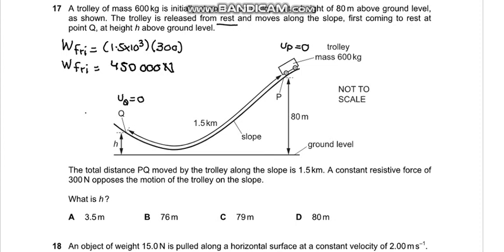Now let's find the total energy at point P. At point P the velocity is 0, so the only energy, the total energy, is the potential energy. So the potential energy is mgh. Mass is given as 600 kg, g is 9.81, and the height is 80 meters. So this gives us 470,880 J. So this is the total energy at P.